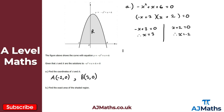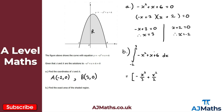For part b we find the exact area of the shaded region by integrating the curve between A and B, i.e. between minus 2 and 3. We integrate minus x squared plus x plus 6 with respect to x from minus 2 to 3. Going term by term: minus x squared integrates to minus x cubed over 3, x integrates to x squared over 2, and 6 integrates to 6x.